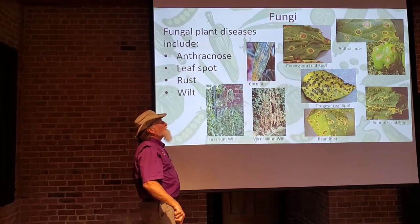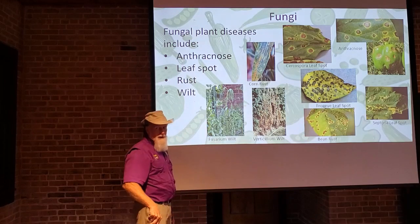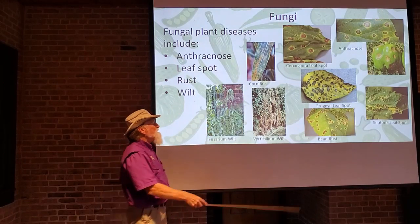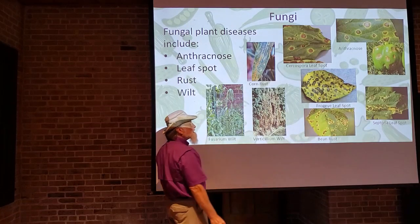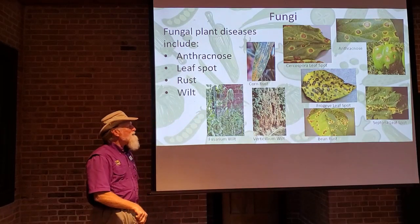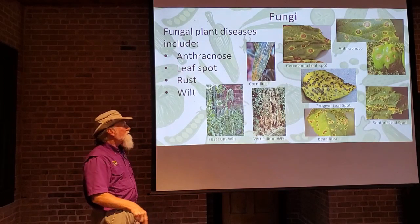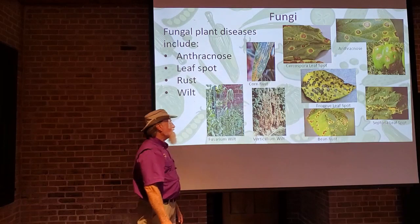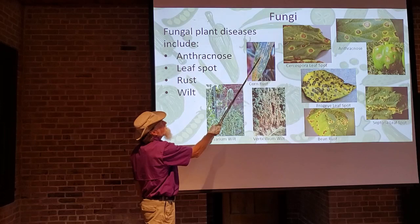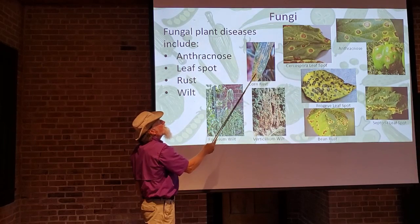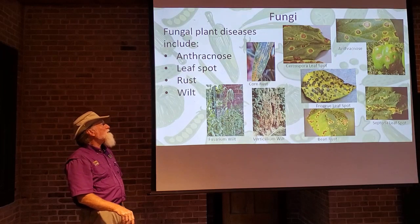Rust is a fungal disease that got its name because it is often rust-colored. With bean rust, as the pustules mature and spores are released, they actually have a reddish-orange dust that comes off — those are the fungal spores being spread. Corn rust shows the spores being released similarly. Rust is another symptom of fungal diseases.